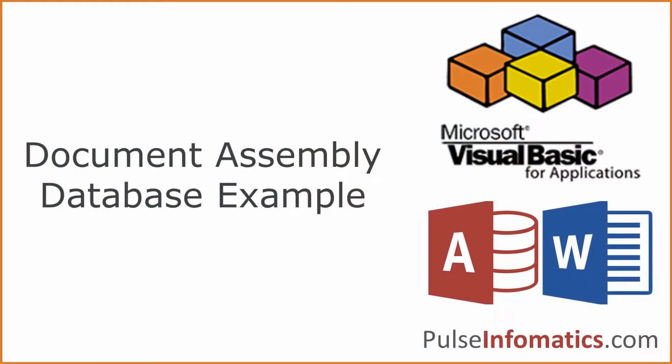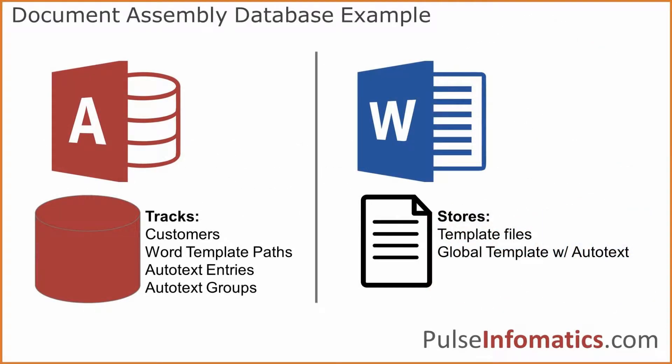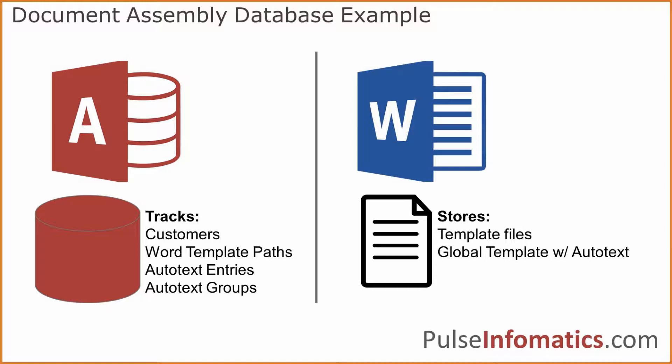The document assembly system is built using Microsoft Access, Microsoft Word, and Visual Basic for Applications, or VBA. The Microsoft Access database stores customers, and it also stores the Word template paths, a listing of the auto text entries, and then auto text groups — and I'll explain what those are. In Word, we have the actual template files and the global template with the auto text.